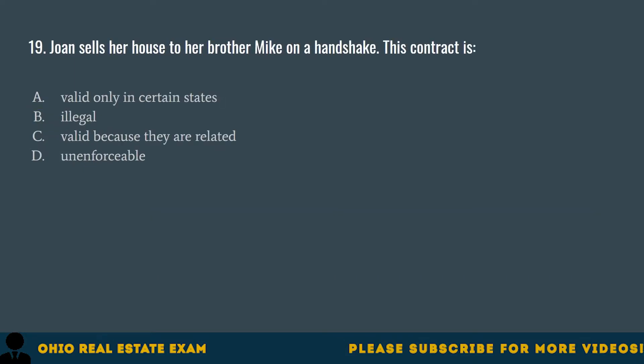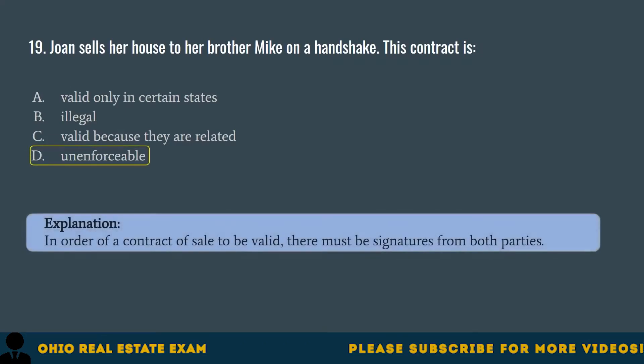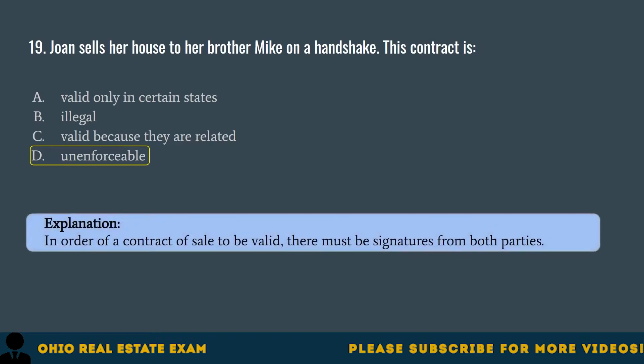Question 19. Joan sells her house to her brother Mike on a handshake. This contract is... A. Valid only in certain states. B. Illegal. C. Valid because they are related. D. Unenforceable. The correct answer is D. Unenforceable. In order for a contract of sale to be valid, there must be signatures from both parties.